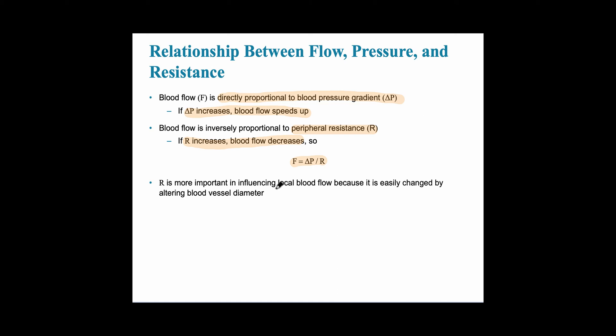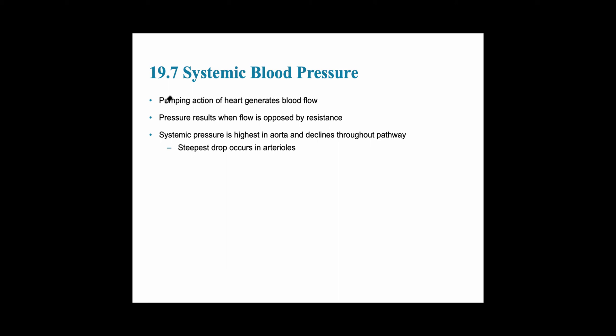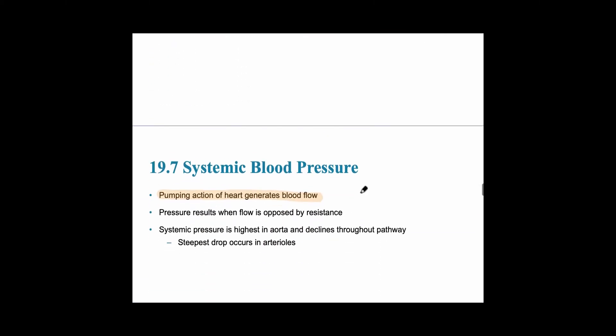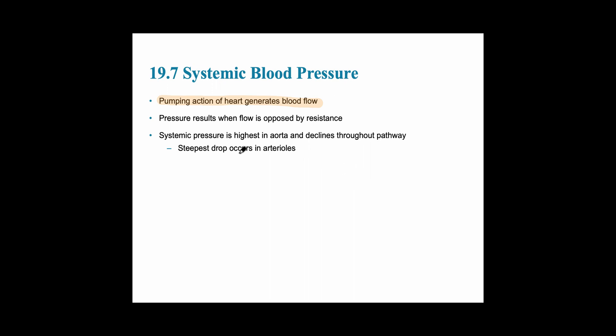Resistance is especially important in influencing local blood flow because it can be easily changed by altering blood vessel diameter. The blood vessel can dilate or constrict primarily because of the tunica media, which has the smooth muscle in it. Systemic blood pressure is the direct blood pressure, the pumping action of the heart that it generates closest to the heart. Pressure results when the flow is opposed by the resistance — flow and pressure are directly related, and resistance is the opposition, so it's inversely related.